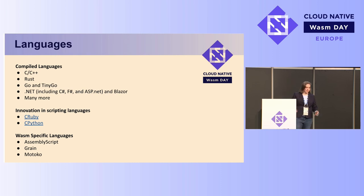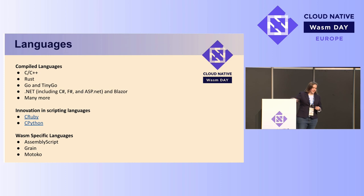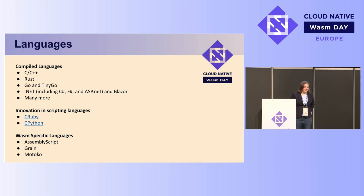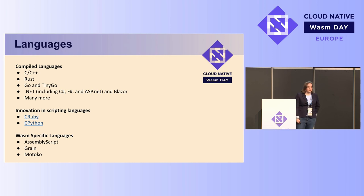If you have a compiled language and that's your favorite, you're in luck — it's very likely it already has support for WASM. I wanted to touch this slide specifically because there's a common misconception that you have to write in Rust to work with WebAssembly, which is kind of hilarious for me because my original case was C++. Even in 2015, C++ and C were the main things you could use with WebAssembly and its precursor ASM.js, largely because Emscripten built off of the LLVM toolchain.